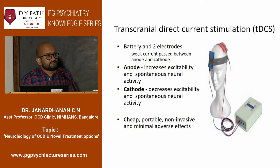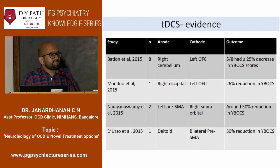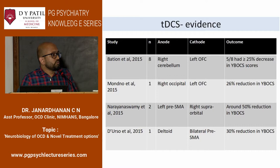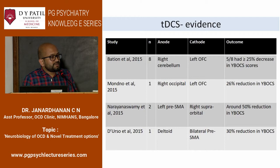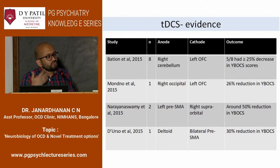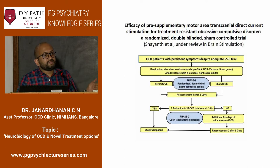Some of the initial observations noticed usefulness of tDCS in OCD — open-label observations including ours — where we reported a couple of cases of treatment-refractory OCD responding remarkably well with tDCS applied on the pre-supplementary motor area using an anode. Our hypothesis was that when the pre-SMA is activated it seems to have a brake-like effect on an overactive striatum — something proven in healthy individuals. We used the same premise in OCD patients and found it useful, which prompted us to study this in a randomized controlled manner.